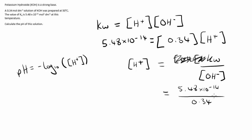So what we need to do from this point is use this to work out the pH. By putting this into our formula which we have here, we can now say that the pH is equal to the minus log base 10 of 5.48 times 10 to the minus 14 divided by 0.34. If we put this into our calculator...